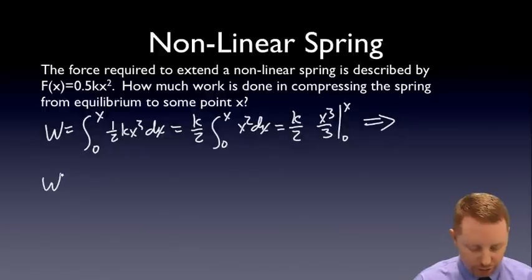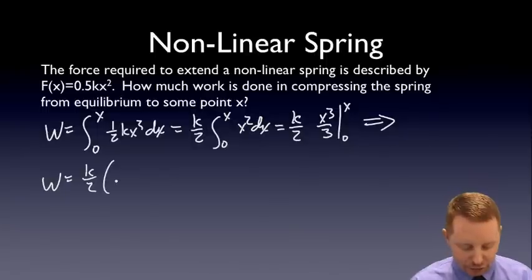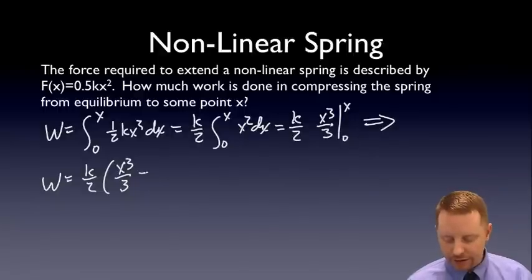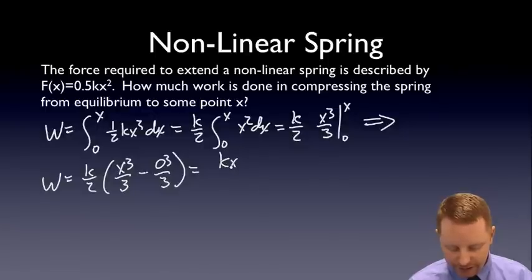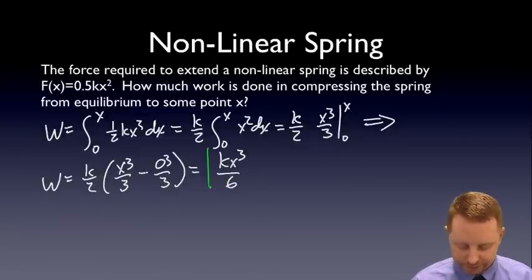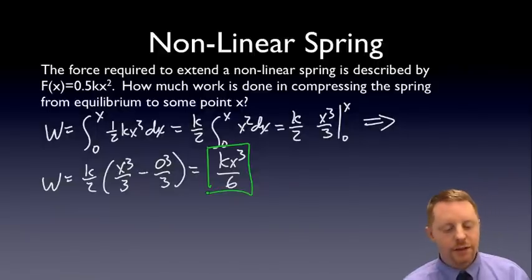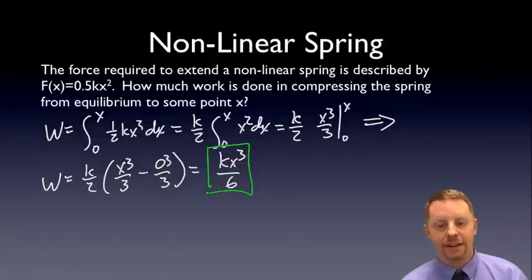The integral of x squared is going to be x cubed over three evaluated from zero to x. Therefore, our work is going to be k over two. Now we have x cubed over three minus, plug in our zero for x, zero cubed over three. Or I come up with our work of k x cubed over six. Okay, so we can do this for a non-linear spring the same way. Using that same basic formula, work is the integral of f dot dr, and applying it to the situation that we're dealing with.